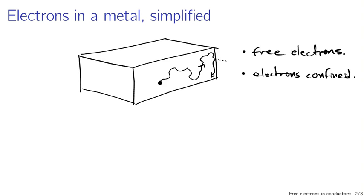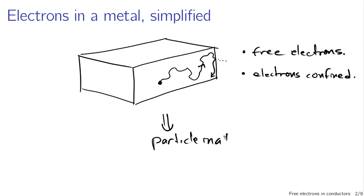We have free particles that are never going to be found outside of some rectangular region — this is starting to look like the particle in a box, so maybe we can work with that. A single particle in a box is easy enough to handle, but what about multiple particles in a box? What if I have a second particle that's also wandering around on its own?